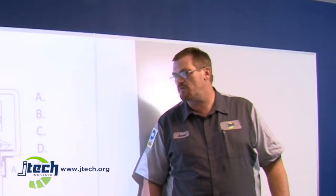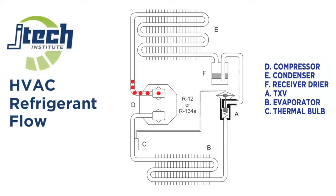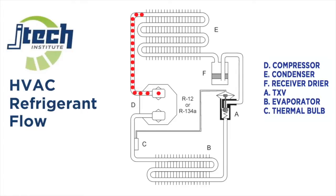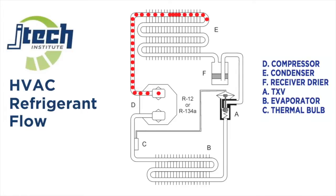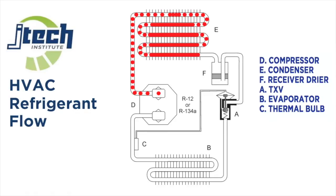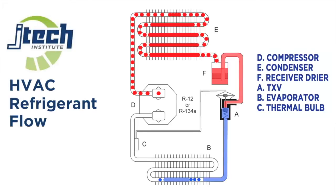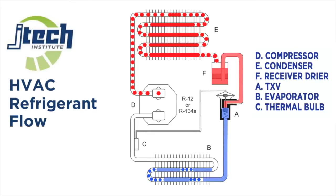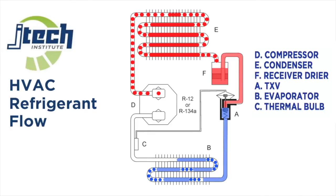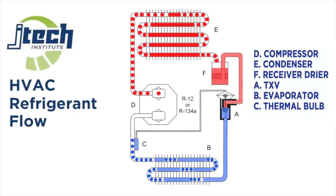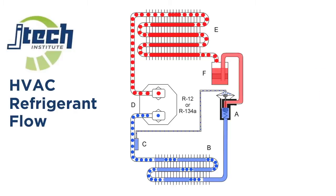Our components — we're going to stick with the basic components of an AC system. When we look at the components, we have them labeled in a standard order, but we're going to follow the understanding a little differently. Instead of starting with A today, we're going to start with D. Any point in a flow we can look at what is happening, but the flow begins at D, which is our compressor.